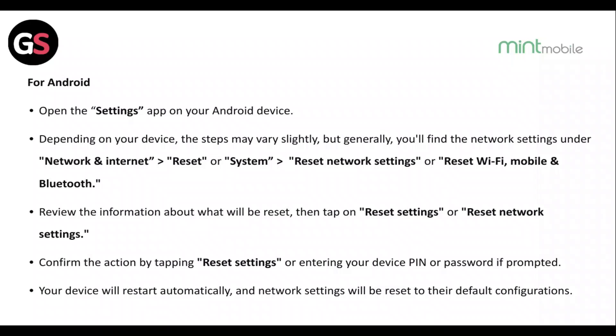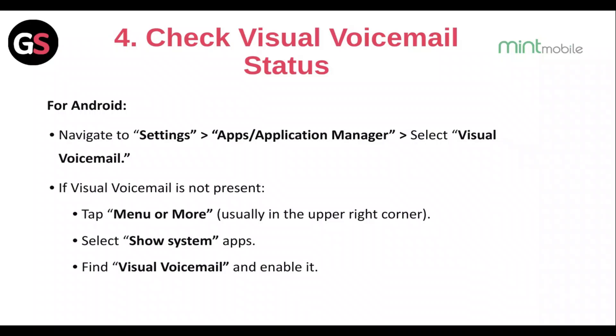Fix 4: Check Visual Voicemail Status. For Android, navigate to Settings, then Apps and Application Manager. Select Visual Voicemail. If Visual Voicemail is not present, tap on Menu or More, then select Show System Apps.